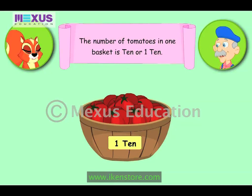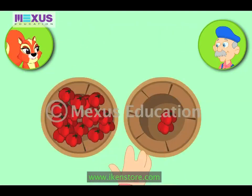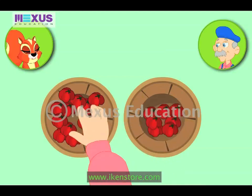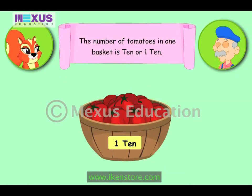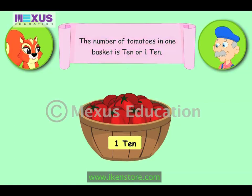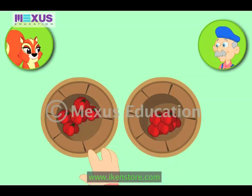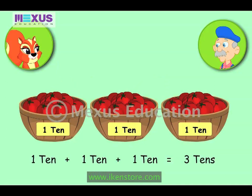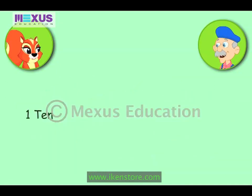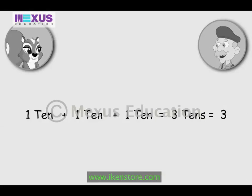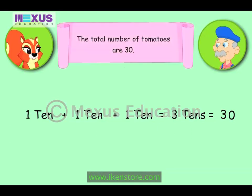The number of tomatoes in this basket is ten, or one ten. We will put ten more tomatoes in another basket. This basket also has one ten. Now we will fill the remaining ten tomatoes in one basket. We will add the number of tens. One ten plus one ten plus one ten is equal to three tens. All you have to do is add a zero after three to give the number of objects. So the total number of tomatoes is thirty. Counting in tens is very simple.